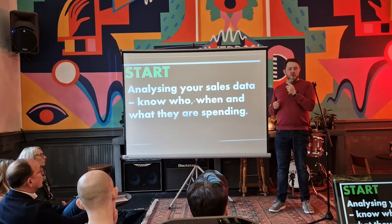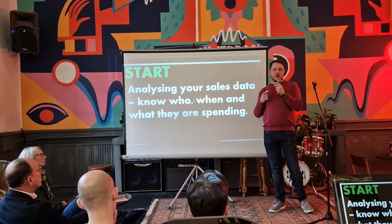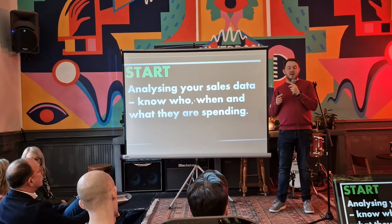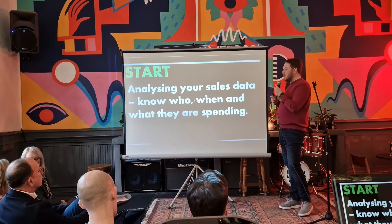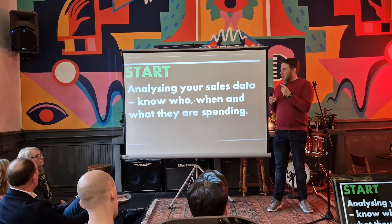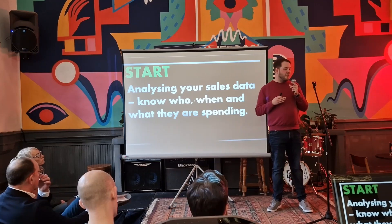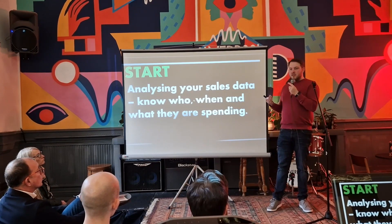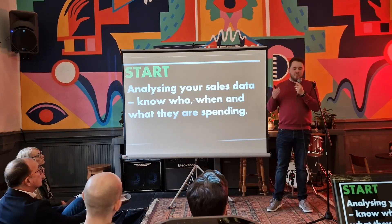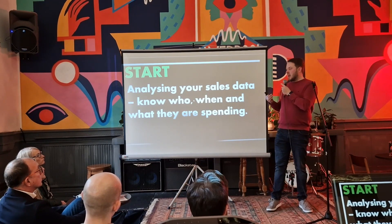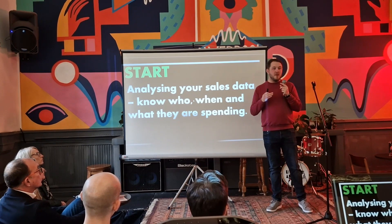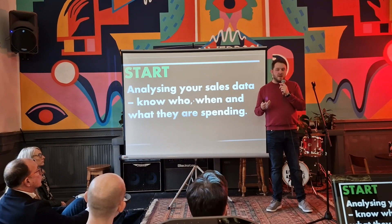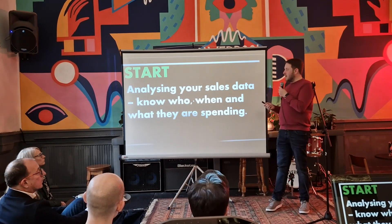The same goes with things like product spend. Using a decent till system, you can categorise all your products, and it pulls through to your cloud-based accounting software. If you've got cloud-based accounting software, everything pulls in by category, which means you don't have to travel into several different locations to actually see where you spend your money and where you're actually making it.